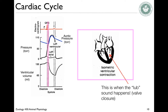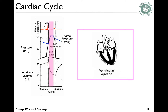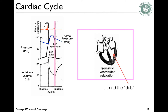This phase is isometric — we have pressure building up inside the ventricles but no volume change, until you reach the point where the arterial valves open. Then you continue to have pressurization, but with the valves open the ventricular volume goes down. This is ventricular ejection. Finally, there's isometric relaxation, which allows the arterial valves to close. This is when ventricular repolarization occurs — the T wave — and that's when you hear the 'dub' sound.